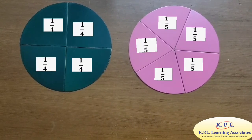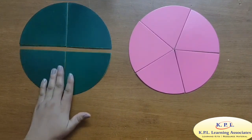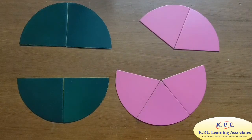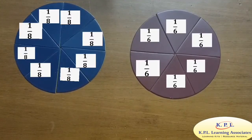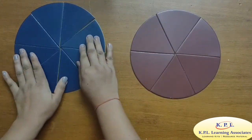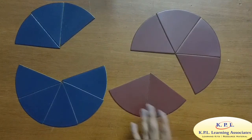This is a circle divided into four equal parts and this is a circle divided into five equal parts. I will take two pieces of one fourth, that is two by four, and three pieces of one fifth, that is three fifth. If we compare these two, we can observe that three fifth occupies more area. Therefore, three fifth is greater than two fourth. Here I have one more example. This circle is divided into eight equal parts and this into six equal parts. Here I have five pieces of one eighth, that is five by eight, and two pieces of one sixth, that is two sixth. We observe that five by eight is greater than two by six.